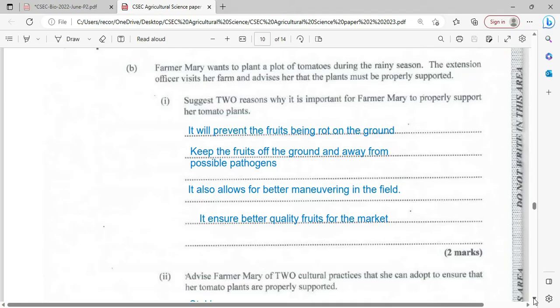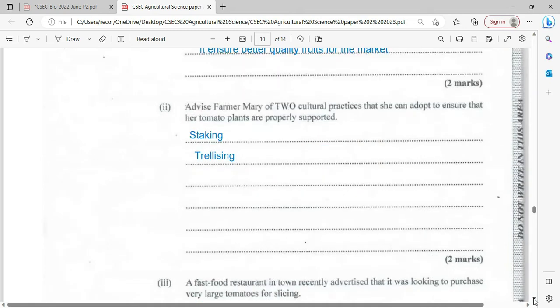It is also very important to ensure that better quality fruits reach the market. Advise Farmer Mary of two cultural practices that she can adopt to ensure that her tomato plants are properly supported. She could employ staking or she could employ trellising.